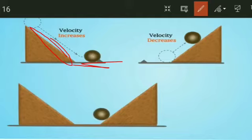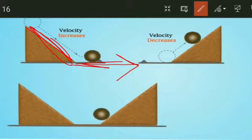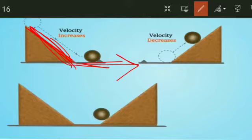He observed that on a smooth surface the ball covers more distance. When the ball is coming from a higher altitude down to ground level, the velocity is increasing. And when it is going up, the velocity is decreasing.